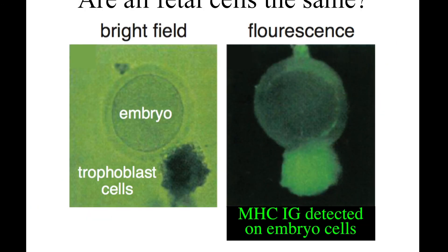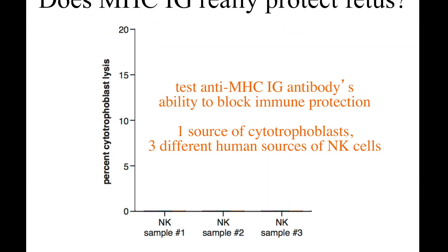If you look for MHC IG molecules — the MHC molecules that can break off from a cell and float around in circulation — when they are labeled with green fluorescent markers, they tend to surround embryos. They are in high concentration around embryos, and the embryo is protected from the maternal immune system.